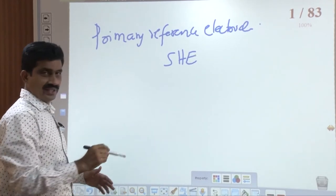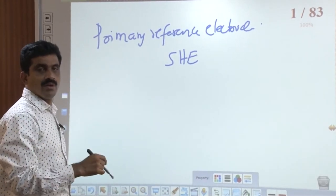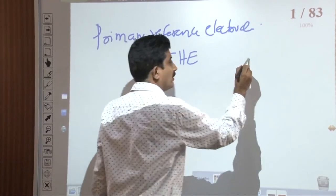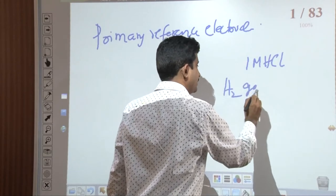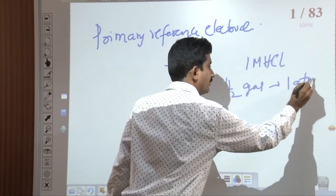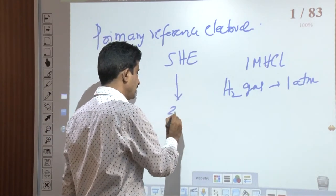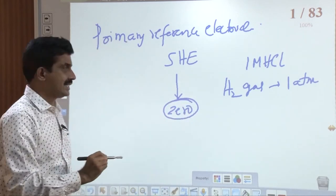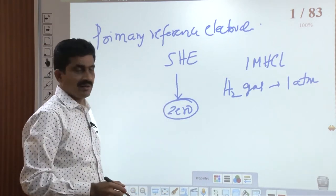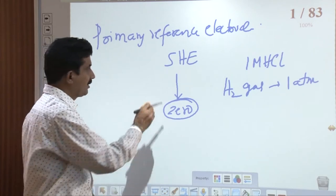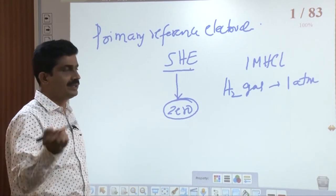The standard hydrogen electrode consists of a foil of platinum dipped in a solution of 1 molar HCl, with hydrogen gas purged at a pressure of 1 atmosphere. If these conditions are maintained, the potential value of SHE is arbitrarily assigned as zero. It is the only primary reference electrode, and with its help the potential values of other electrodes have been determined.